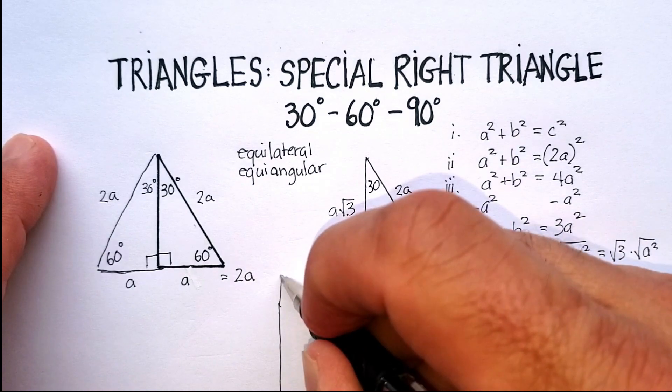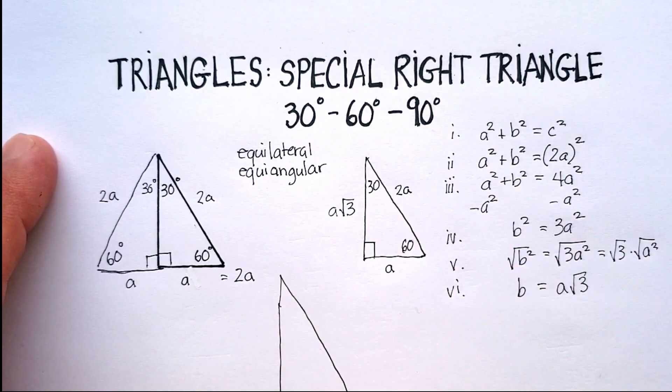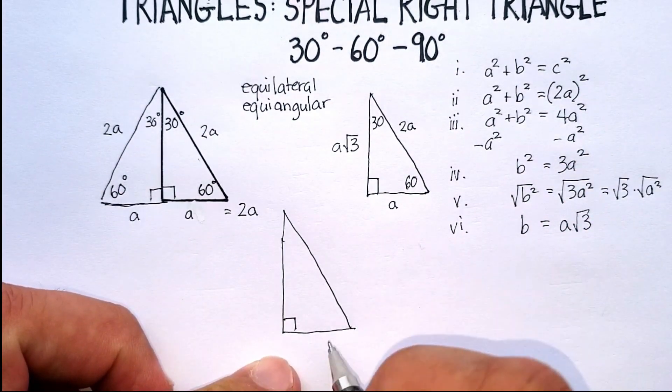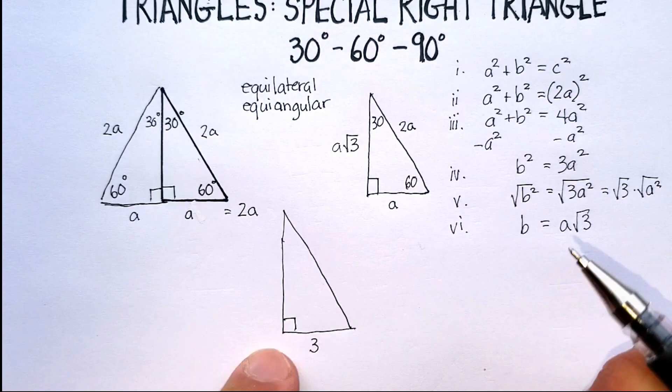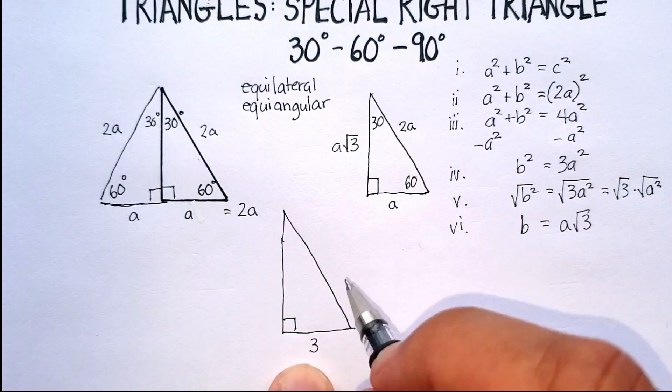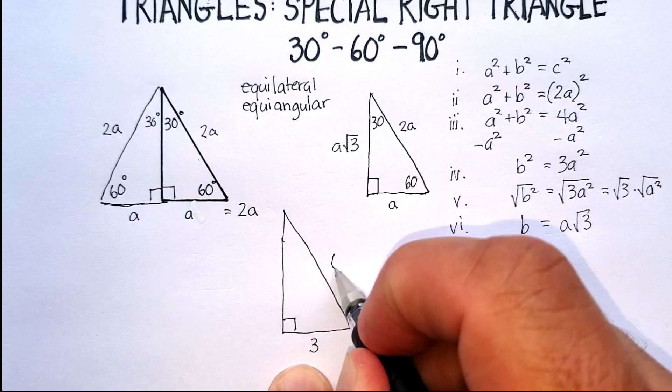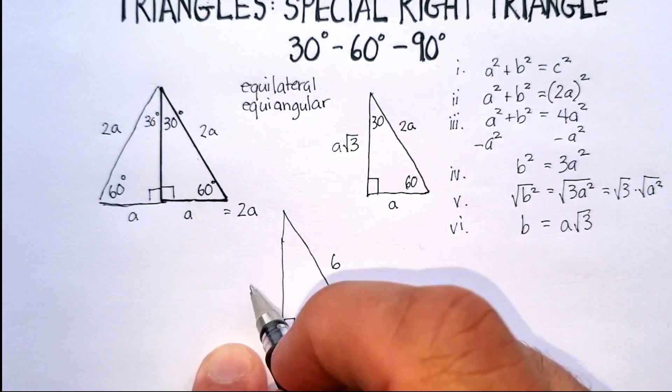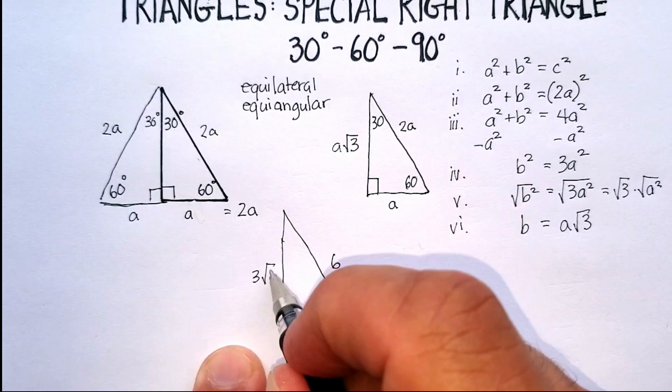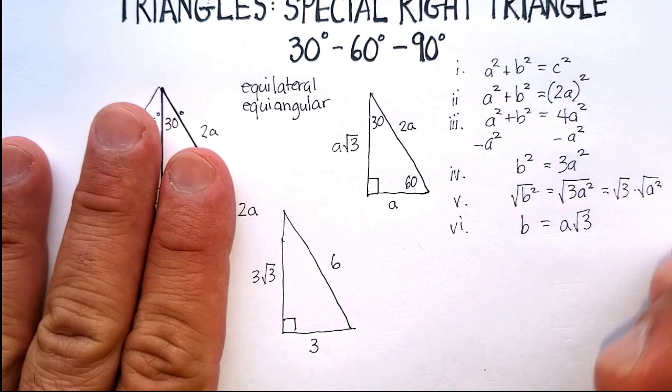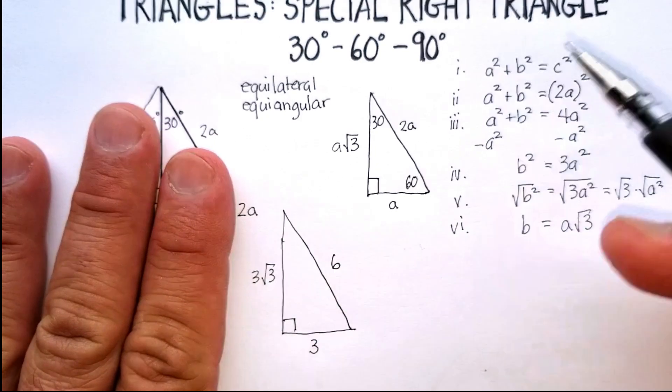Let's take this 30, 60, 90. I'm freehanding this so they're not perfect by any means. There we go. And let's say that this side over here is 3. I can immediately just fill in knowing this formula. If this is 3, this is 2 times 3. If this is 3, this is 3 times radical 3. And boom, there is your 30, 60, 90 degree triangle with each of the sides figured out.